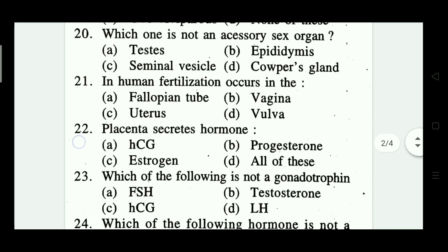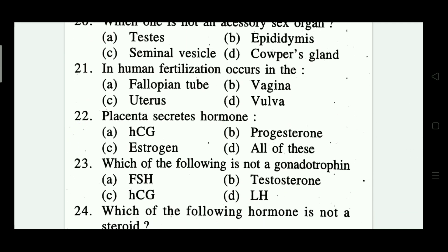Question twenty-one: in human fertilization occurs in — fallopian tube, vagina, uterus, vulva. Which one is correct? Fallopian tube is the correct answer.